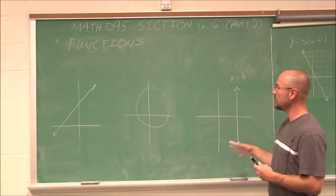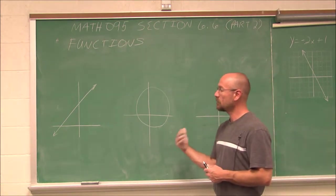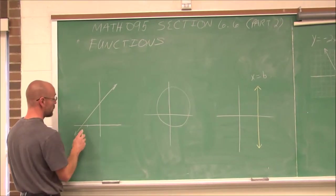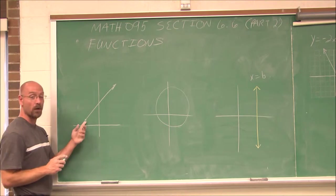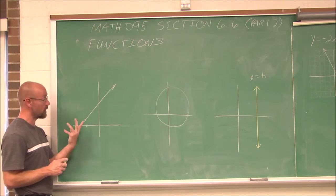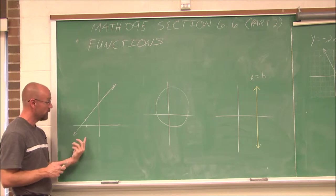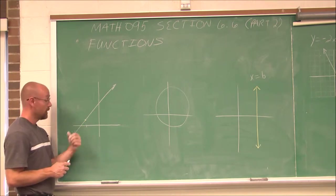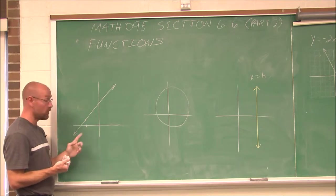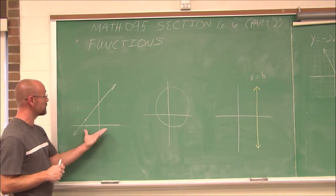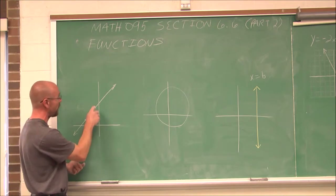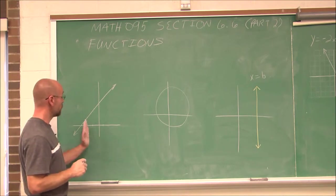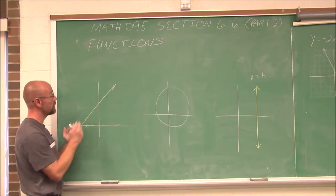Now, which one of these are functions? A function is defined such that for each value of x, it corresponds to only one y. So this x corresponds to only one y — there's no other value that x corresponds to. If I wrote this as an ordered pair, it'd be (x, y). Only one point comes from one input, so this is a function.